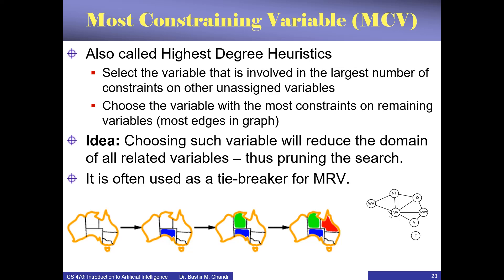Because if we do that, it automatically reduces the possibilities for the other variables to two immediately. Suppose we decide to assign blue to South Australia. Then we can choose, for example, green for Northern Territory, red for Queensland, and so on. The algorithm says: choose the most constraining variable — the one that constrains other variables the most.